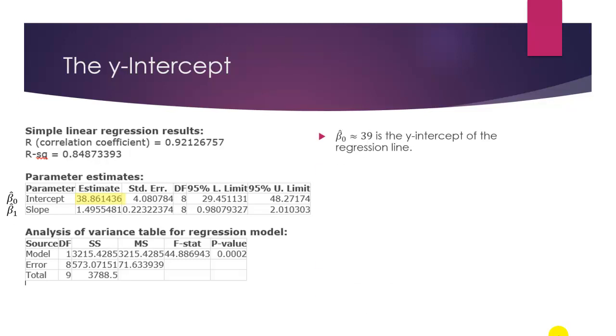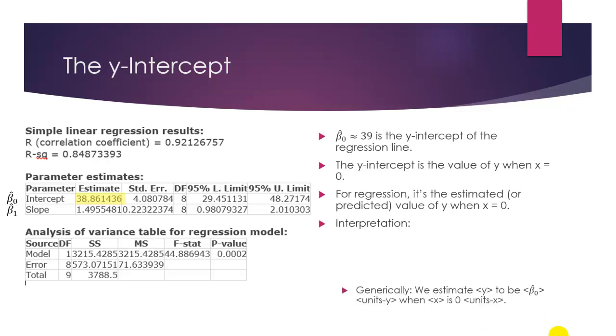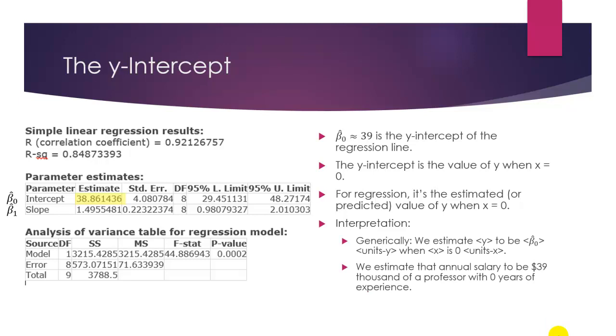So for our data, beta-naught-hat is approximately 39. To interpret this value, recall that the y-intercept is the value of y when x is 0. For our example, we can say that we estimate the annual salary to be approximately $39,000 for a professor that has 0 years of experience.